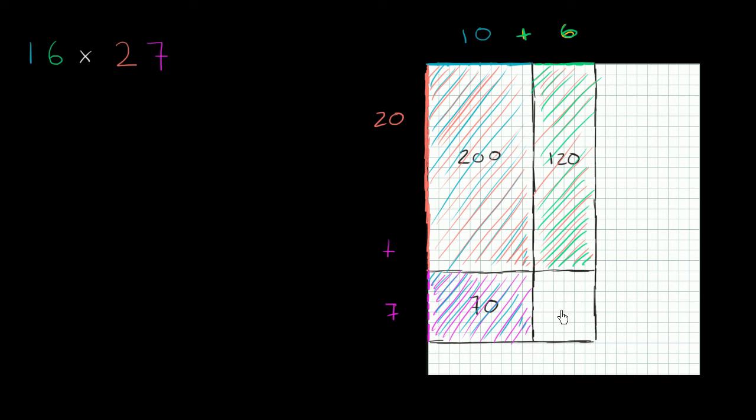And then finally, what's the area of this little section right over here? It's 7 high and it's 6 wide. So it's going to be 7 times 6, or 42 square units of area.